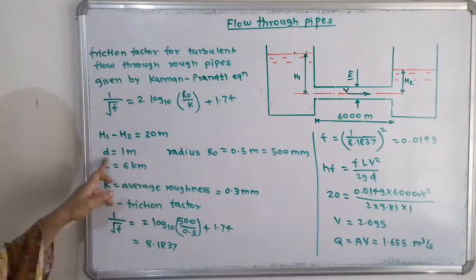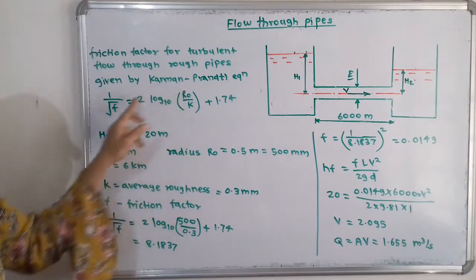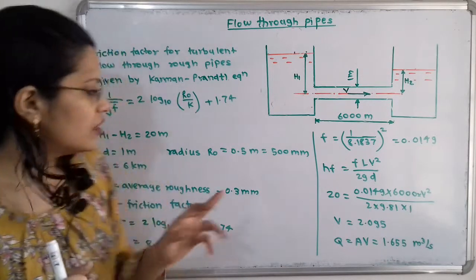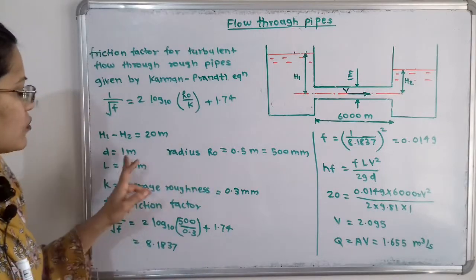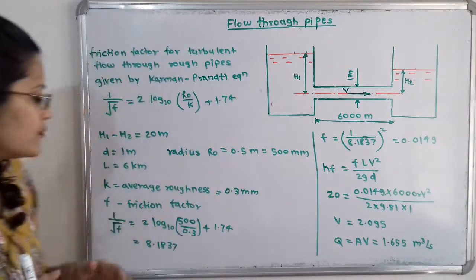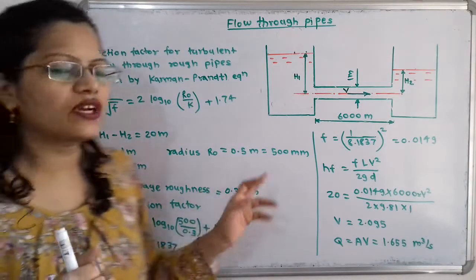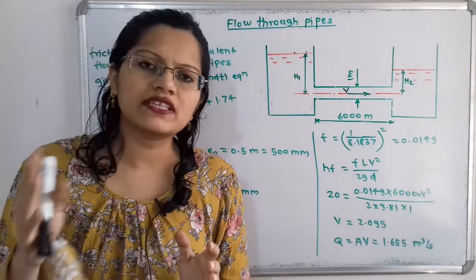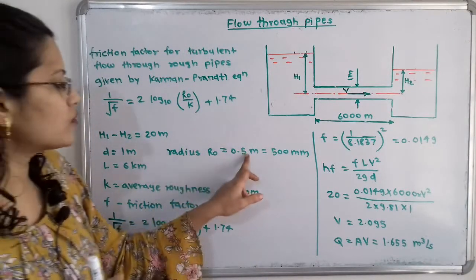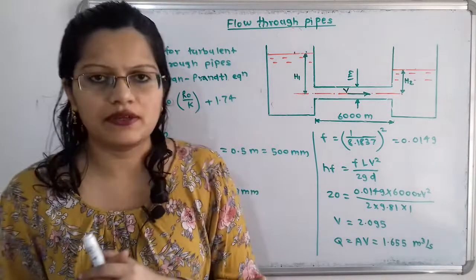From the diameter we calculate the radius R0, because R0 is used in the friction factor formula. So R0 is equal to 0.5 meter. The average roughness k for cast iron is given as 0.3 millimeter. To keep consistent units, we convert R0 to millimeters: R0 equals 500 millimeters.